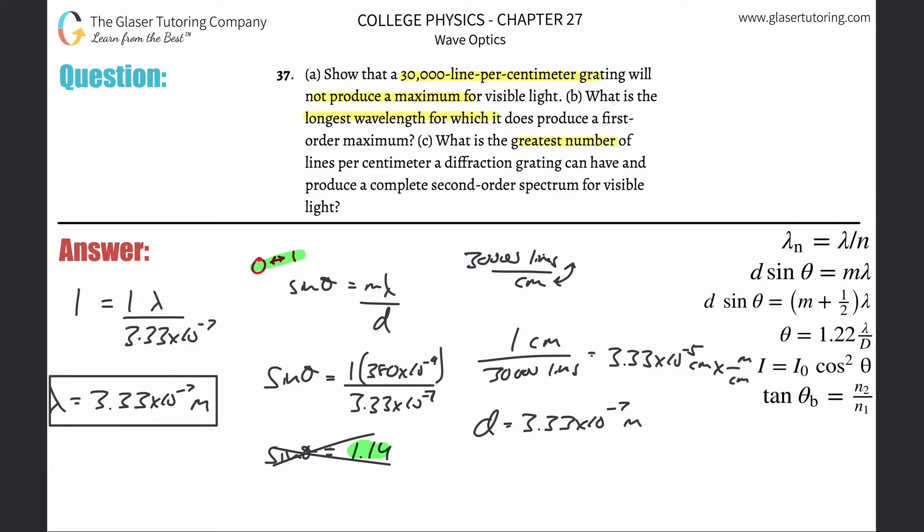What's the greatest number of lines per centimeter diffraction grading can have to produce a complete second order spectrum? So again, this is kind of the same. I know I'm all over the place here. This was like letter A. Here's letter B. And I don't really know. I guess I'll put C all the way down here. So what is the greatest number of lines per centimeter? Let's start with the same formula. So it's basically going to be d sine theta is going to be equal to m lambda. Now what I'm looking for is I'm looking for the greatest number of lines per centimeter. So I've got to be solving for d here.